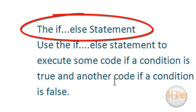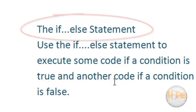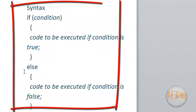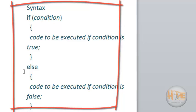Now the if-else statement. Use the if-else statement to execute some code if a condition is true, and another code if the condition is false. The syntax is: if the condition is true, the first code block is executed; if the condition is false, the else code block is executed.